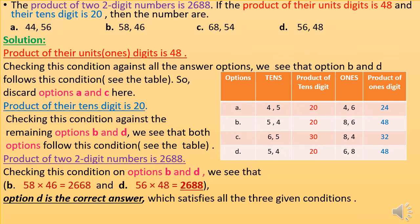The first condition is that the product of their units digits is 48 — units means ones digits. Checking this condition against all the answer options, we see that options B and D follow this condition. Both B and D have a product of ones digits equal to 48. So we can discard options A and C. Now for the second condition: the product of their tens digits is 20.